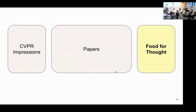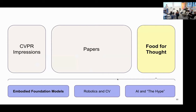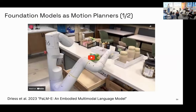Now for the food for thought section. Three main takeaways: embodied foundation models, robotics and computer vision, and AI and the hype. On foundation models as motion planners — this term describes multimodal, often transformer-based models showing emergent properties useful to downstream tasks. In robotics, motion planning is very complex: fetching something from a drawer requires scanning the scene, locating the kitchen, navigating there, finding the drawer, opening it, and so on.